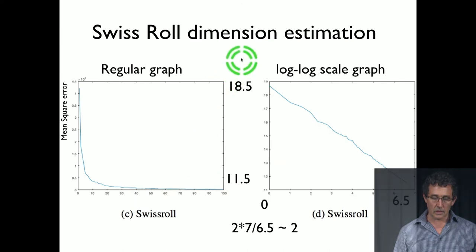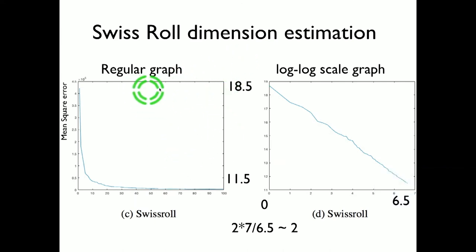So we take the same approach, draw the log of the mean square error and the log of the number of examples, we get a more or less straight line. And if we measure the slope of that, indeed we get that it is about 2. So in this case, we recover exactly the true dimension.